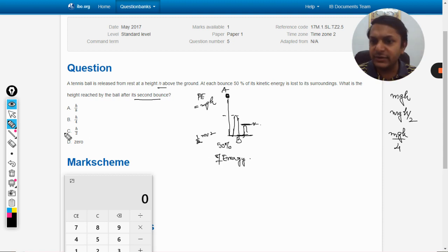So your answer will be h by 4. Answer will be B. You are left only with 25 percent of the energy. 100 percent energy, then it is having 50 percent, then 25 percent of the energy. That is why it is h by 4. All the best, bye.